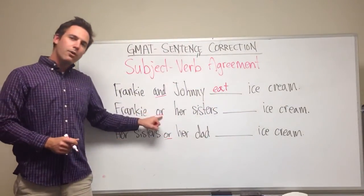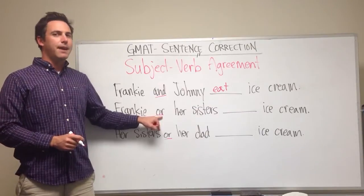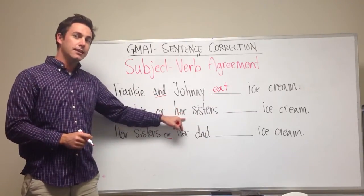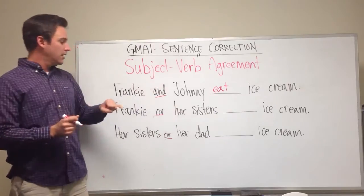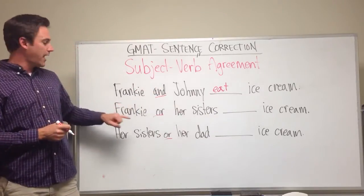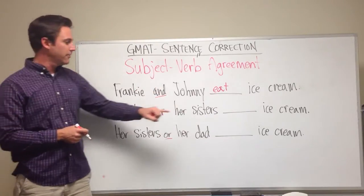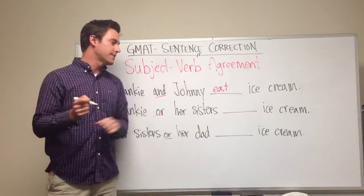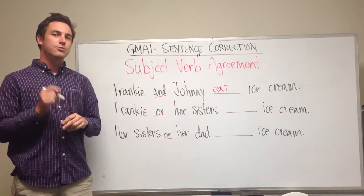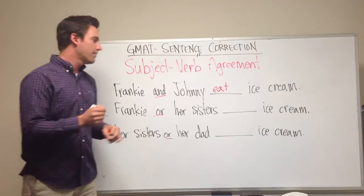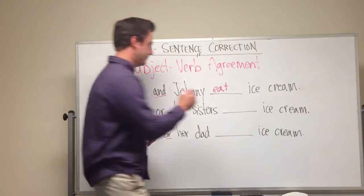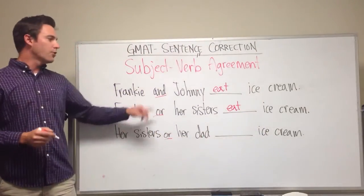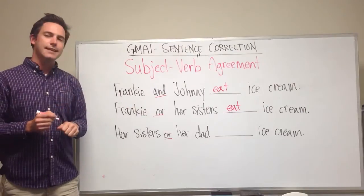When you have an OR, the rule is a little bit different. It depends on what is the last noun in the list of subjects. So in this case, we have Frankie, which is singular. Then we have sisters, which is plural — we have a couple of sisters here. And so that's going to affect our verb and make it plural. So: Frankie or her sisters eat ice cream.